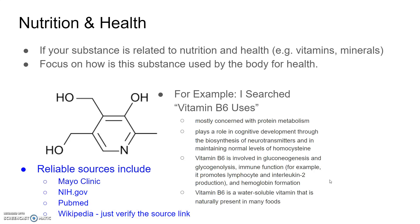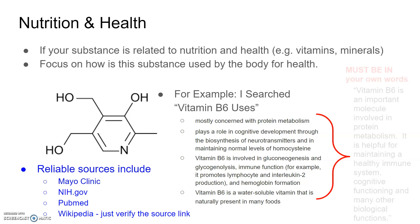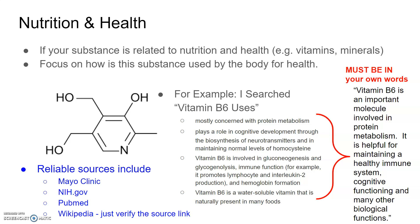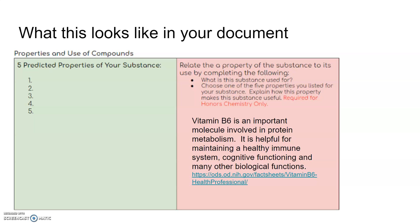What I said instead of all of that was: vitamin B6 is an important molecule involved in protein metabolism. It is helpful for maintaining a healthy immune system, cognitive functioning, and many other biological functions. I didn't include everything — I just gave the basics, so someone knows that vitamin B6 is important and is related to protein metabolism, a healthy immune system, and cognitive functioning. Cognitive functioning just means brain functioning. What would this look like in my document? I would just take that information I wrote and copy and paste it in there.